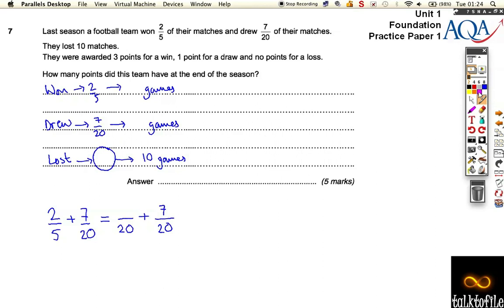However, this first one, we've had to multiply the bottom, the denominator of that fraction, by 4. So in order to keep the fraction the same without changing its value, make it equivalent, we times the top by 4. So that's 8 out of 20, which tells me that's 15 20ths, which actually cancels down nicely to 3 quarters.